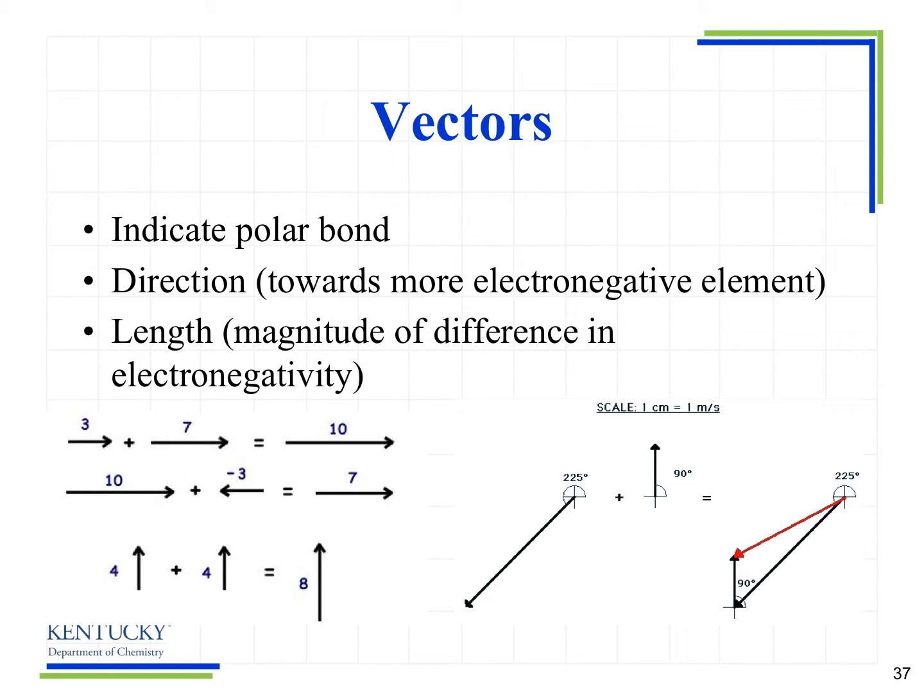Now imagine that the polar bond is represented by a vector. The more polar, the bigger the magnitude of the vector. The direction shows the way the electron density is shifting. Imagine we have a molecule with multiple vectors because it has multiple polar bonds. We want to see what the sum of those vectors is.